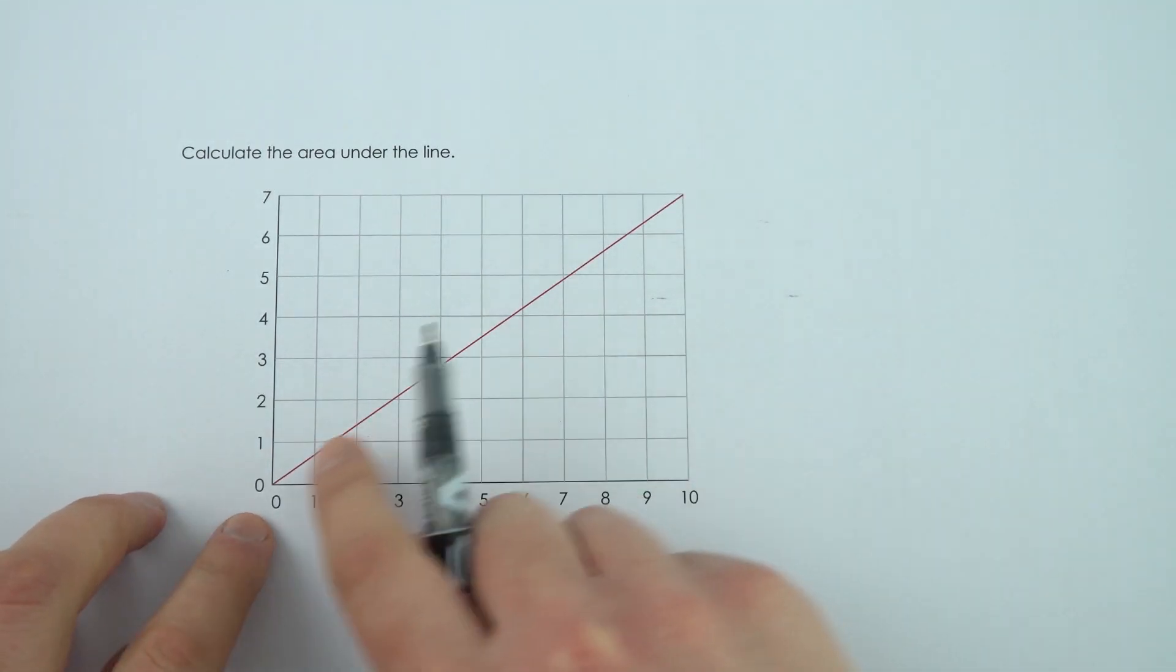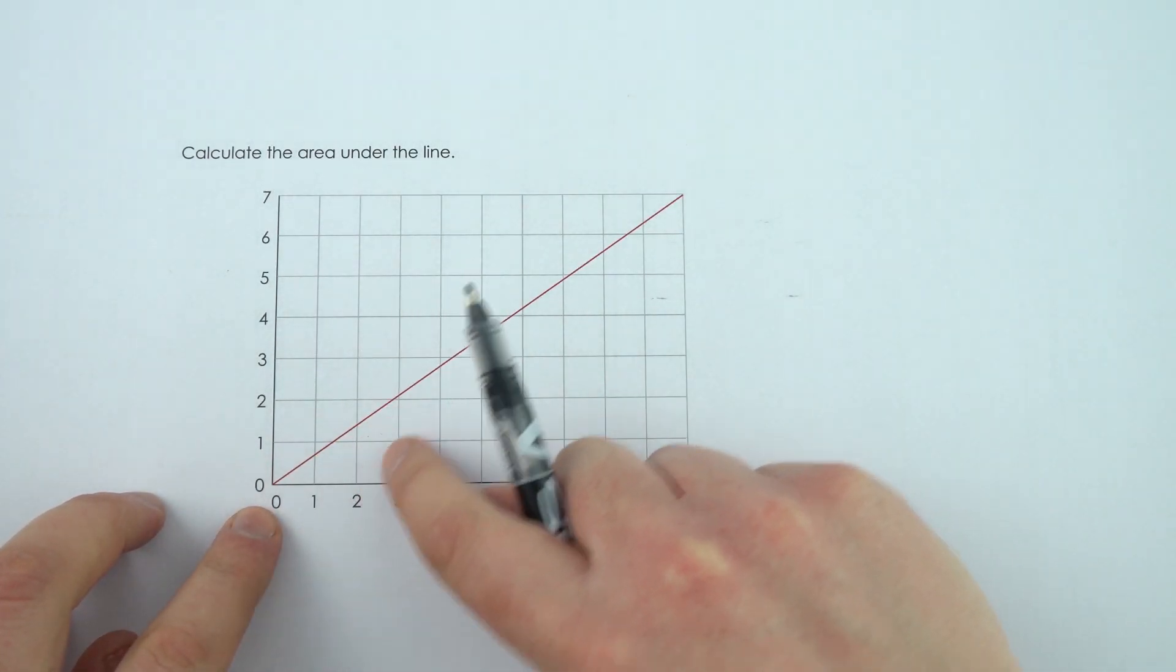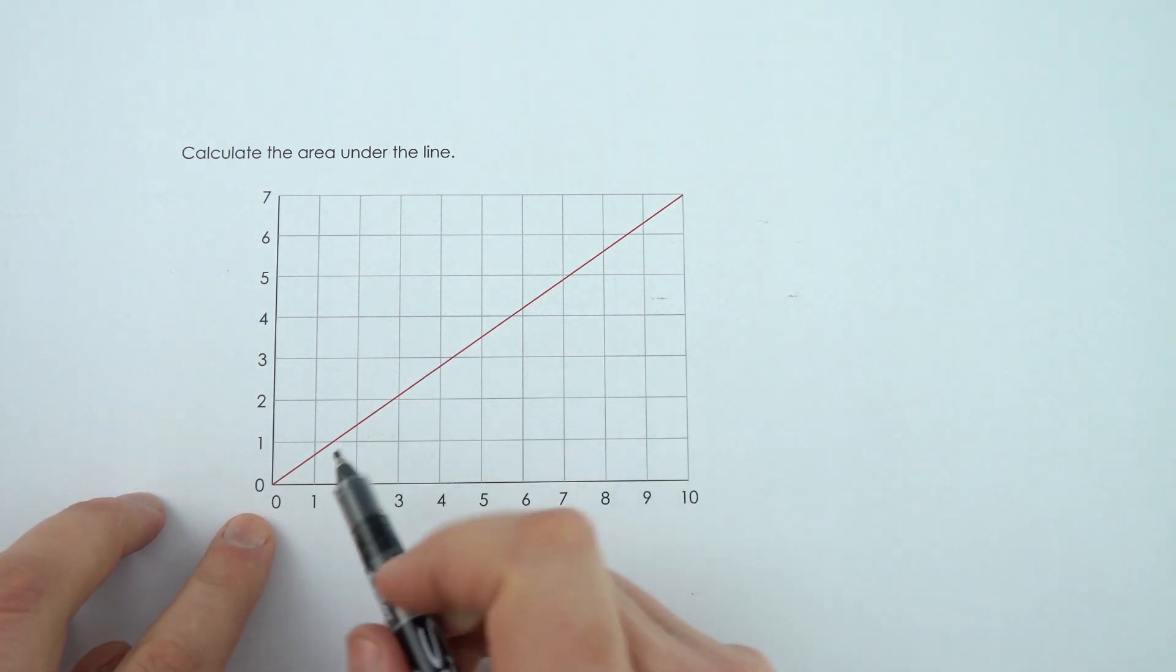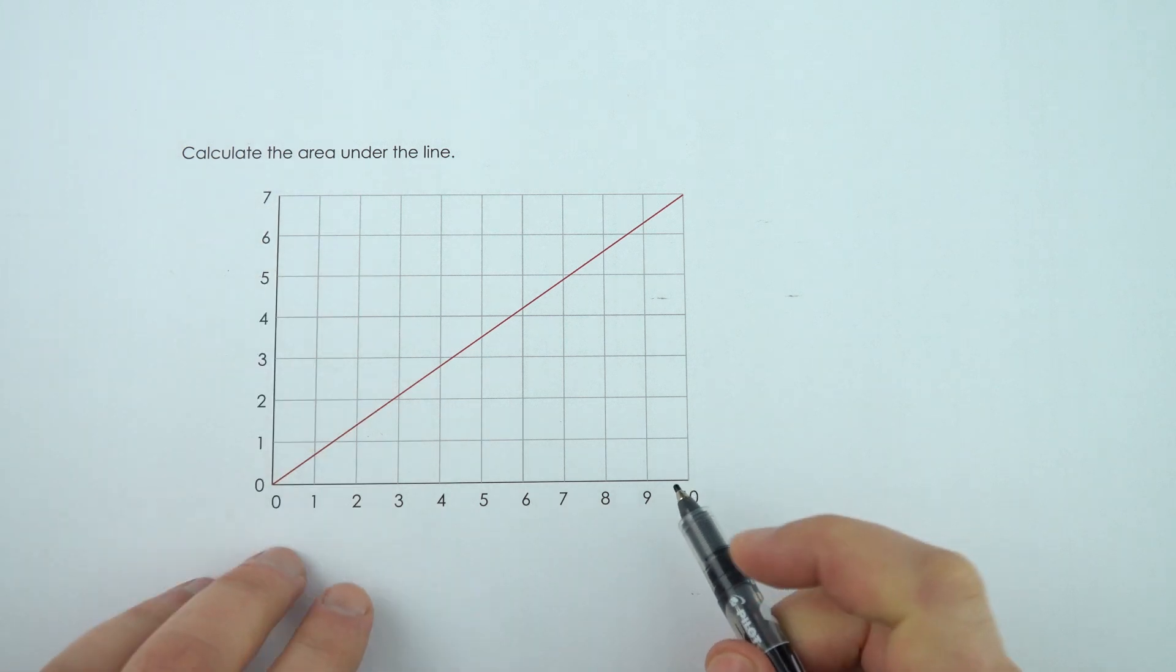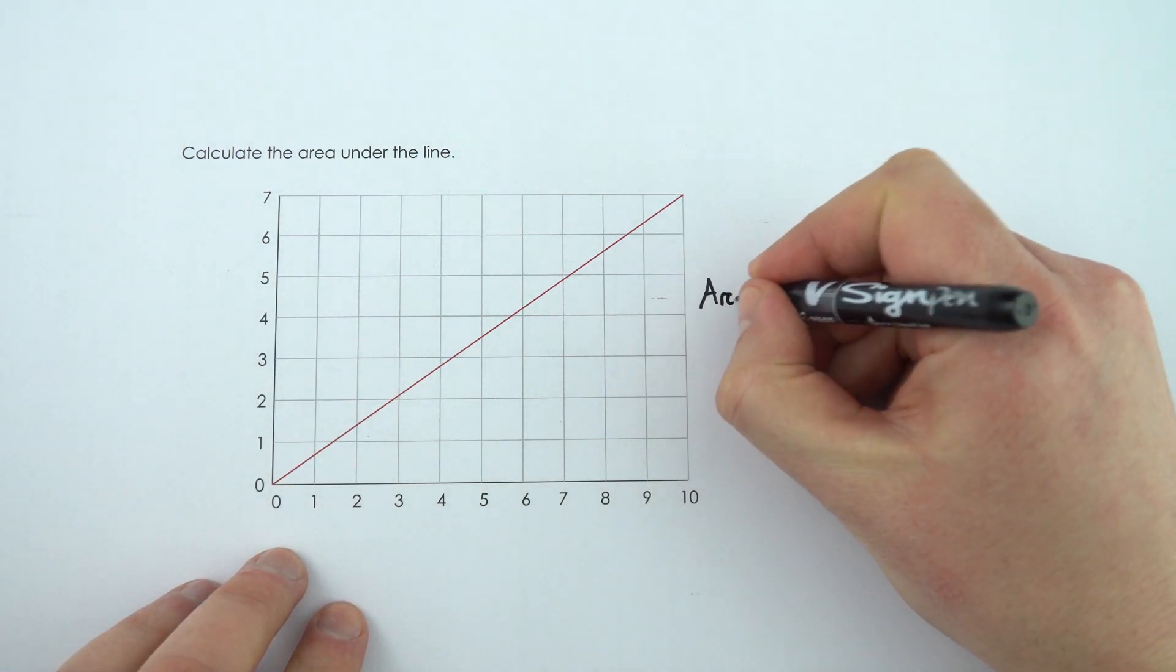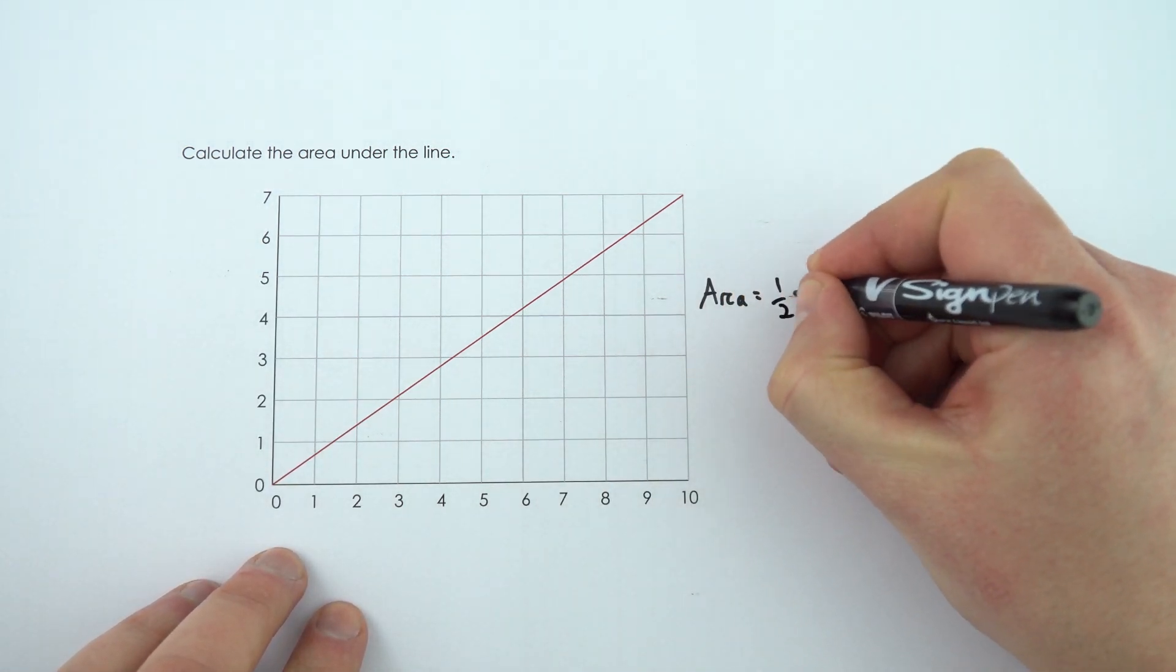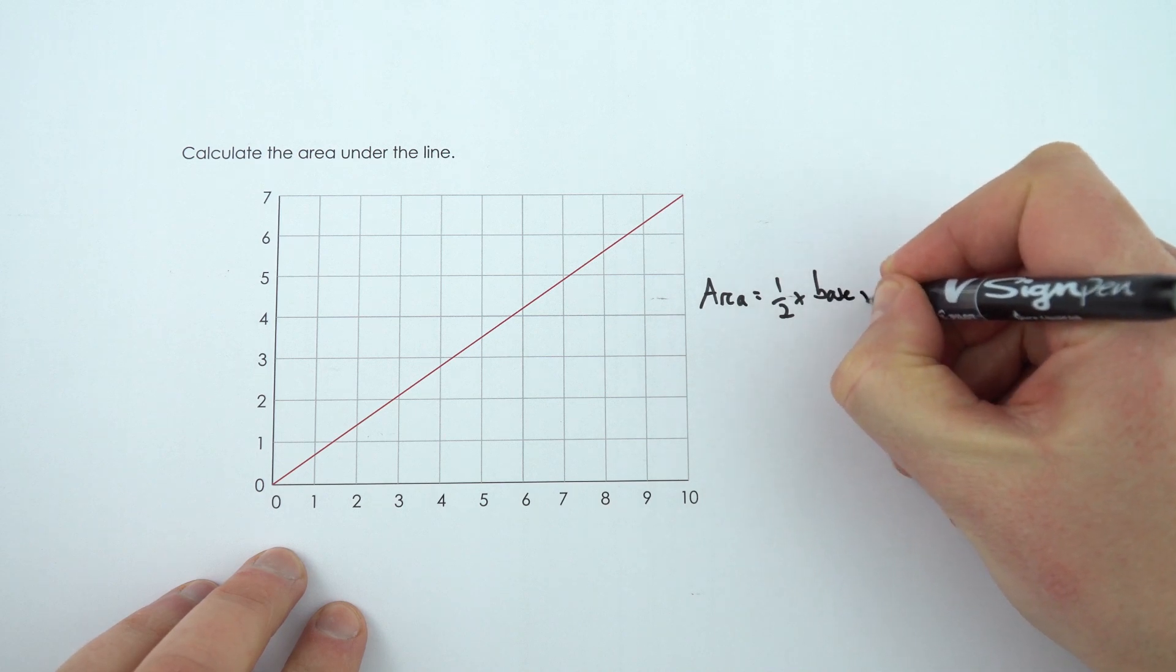For example, here we have a line and we're going to look at the area under that line. We can see that it goes from 0 to 10 along this way and it goes from 0 to 7 up there. So if we wanted to look at the area, it's going to be equal to a half times the base times the height.